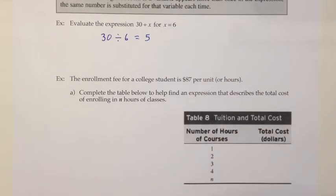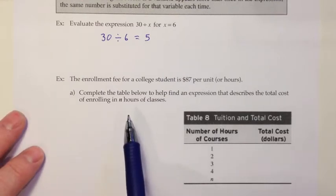Let's look at that now in the context of an application. The enrollment fee for a college student is $87 per unit. We call them units here at Chabot. A lot of other colleges and universities refer to them as hours. So in this problem, you're going to keep hearing them talk about the number of hours a student is taking and just translate that to units.